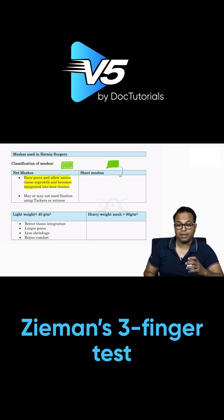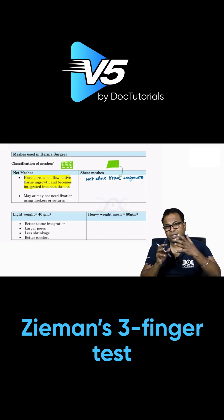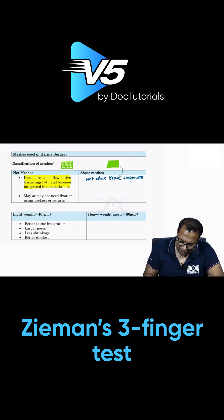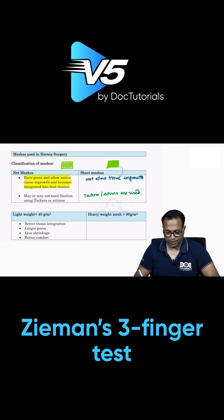Sheet mesh is different. Sheet mesh will not allow tissue ingrowth. Since tissue ingrowth will happen and hold the mesh in net mesh, there's no need for fixation. But in sheet mesh, you need tackers or sutures for fixation.